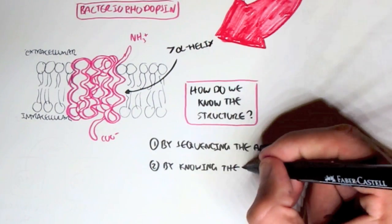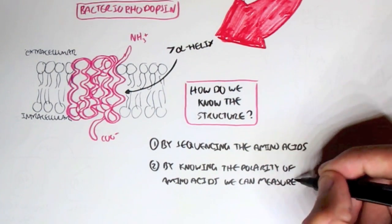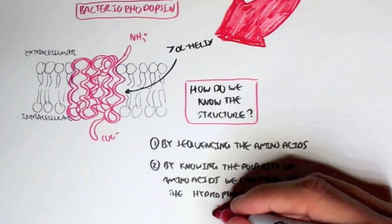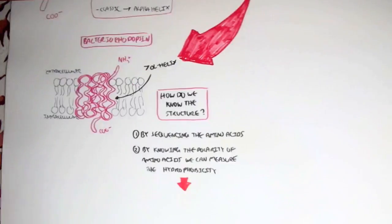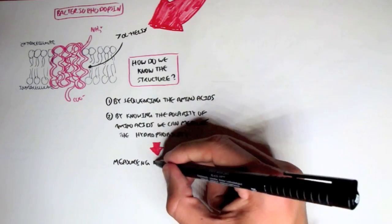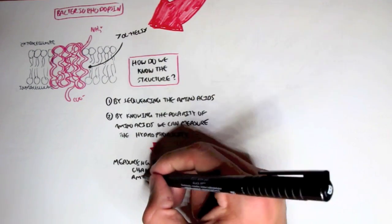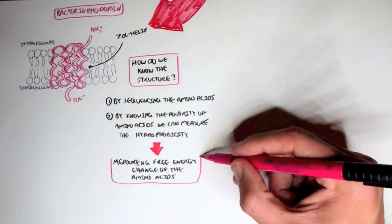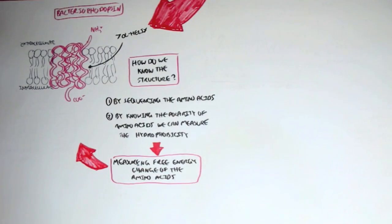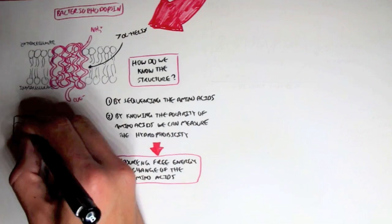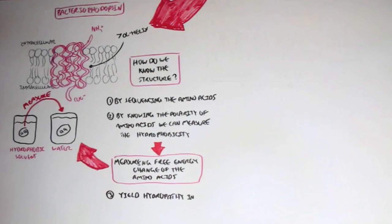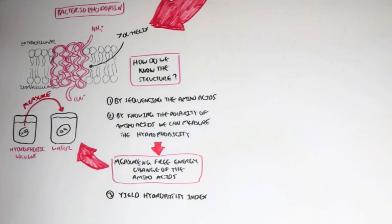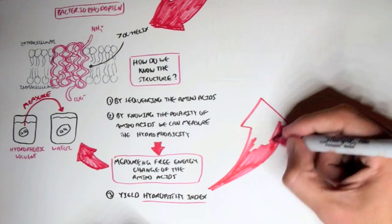By sequencing the amino acids and knowing the polarity of each amino acid, we can measure the hydrophobicity of each amino acid in a given area. To measure hydrophobicity, we measure the free energy change of an amino acid when we move it from a hydrophobic solvent to water. By measuring this hydrophobicity, we yield a hydropathy index for each amino acid in the whole protein structure in the membrane.